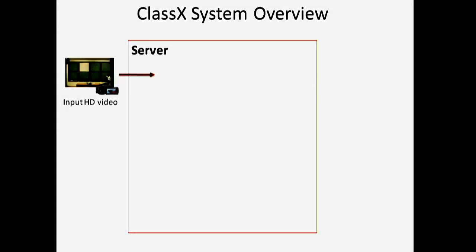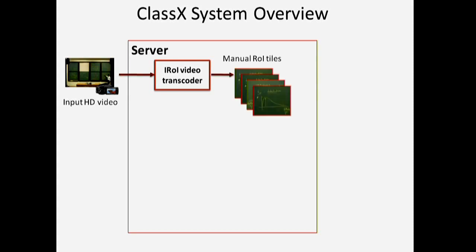So how does ClassX provide these features? First, the recorded HD video is uploaded to the server, where it is supplied to an interactive region of interest video transcoder, whose job is to transcode this video into multiple tiles to facilitate spatial random access.